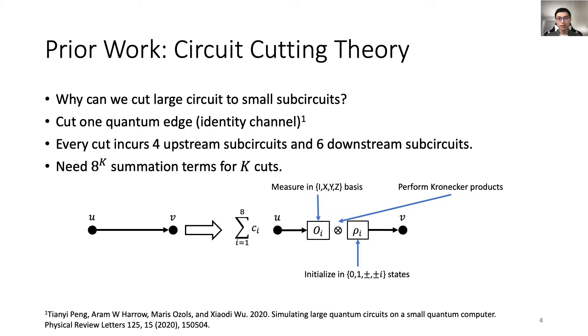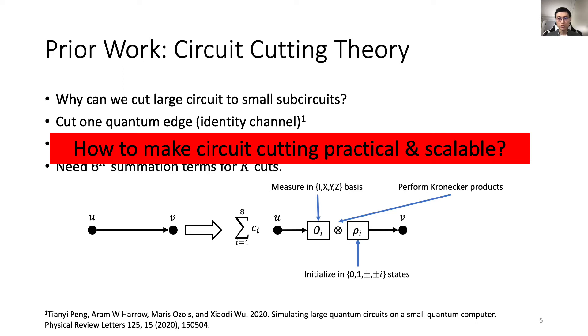The theory of cutting a quantum circuit comes from decomposing an identity channel. Every cut incurs four upstream sub-circuits, each measured in a different basis, and six downstream sub-circuits, each initialized in a different state. The classical reconstruction involves performing eight pairs of Kronecker products between the different sub-circuit outputs and compute the sum of the pairs. Altogether, there are 8^k summation terms for k cuts. The important question is, how to make circuit cutting practical and scalable?